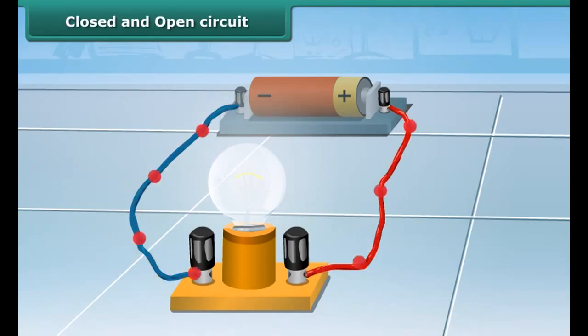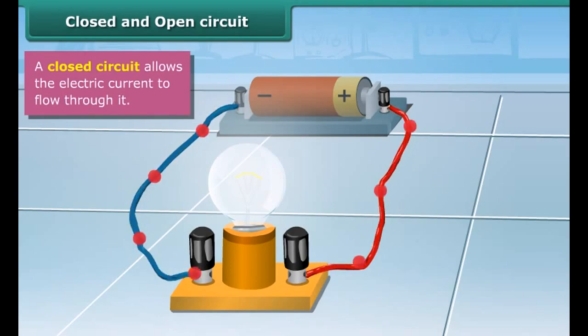Closed and open circuit. If you see both the wires are connected to both terminals, it is an unbroken path. It is a closed circuit.